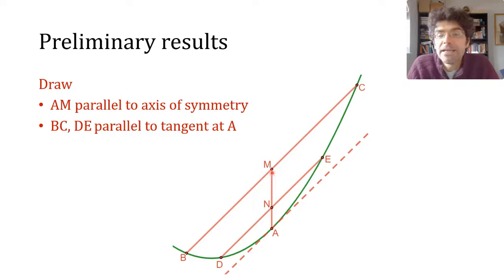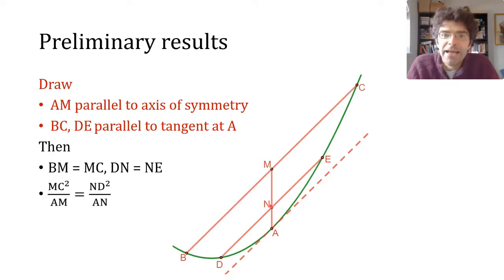And in any such chord like BC, we have CM squared over AM in constant. So if we pick some other point D on the parabola and draw DE, it's also parallel to BC, then we're going to have MC squared over AM equal to MD squared over AM.